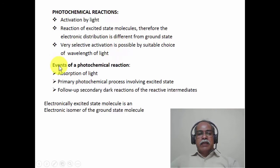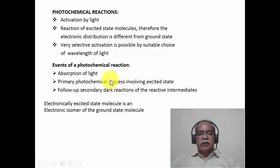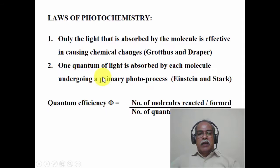The events taking place in photochemical reactions are as follows. The first event must be the absorption of light — without absorption of light, you cannot have photochemistry. The primary photochemical process involves the excited state, followed by secondary dark reactions arising from reactive intermediates. These are at least three types of processes that take place in any photochemical reaction. We will not pay much attention to photophysical processes in this module; we will consider them in later modules.